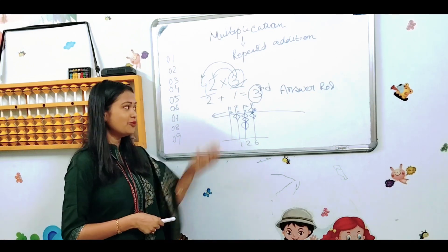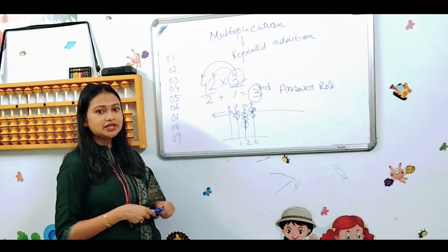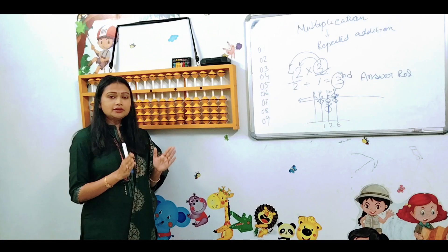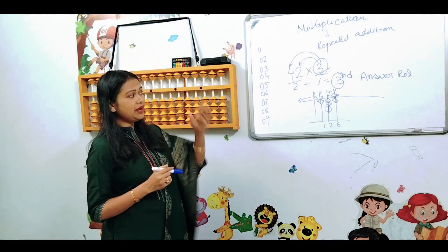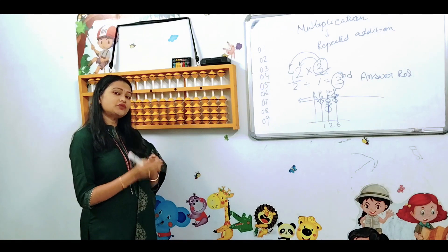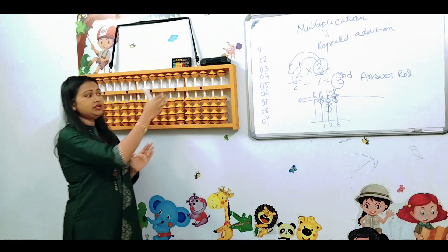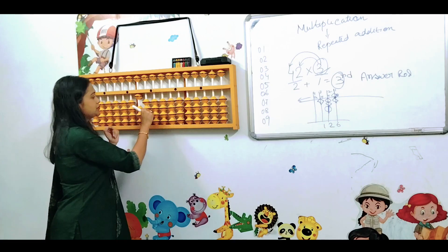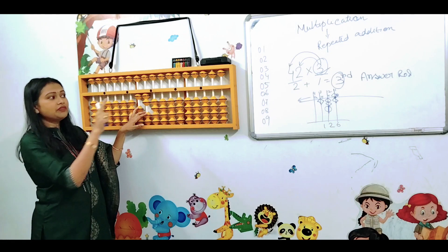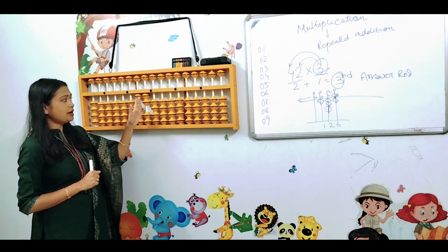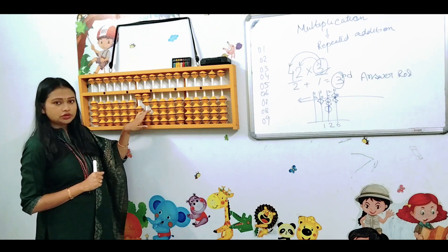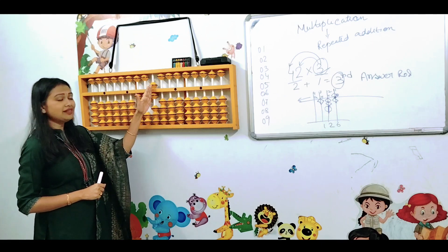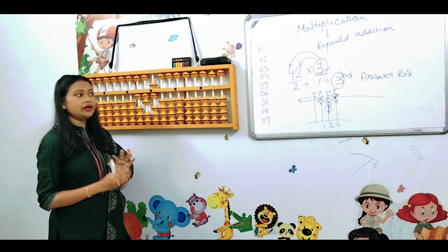If you know the multiplication, look at 126. Now let's see how we do this: 42 into 3. If you know the school-year process of multiplication, you multiply the number above. So 3, 4 is 12. The answer is 1st, 2nd, 3rd — the answer is 12. Then 3, 2, 6. If you know the answer is 6, then the answer is starting point — 0, 6. If you count the middle point, then the answer is 1, 2, 6.